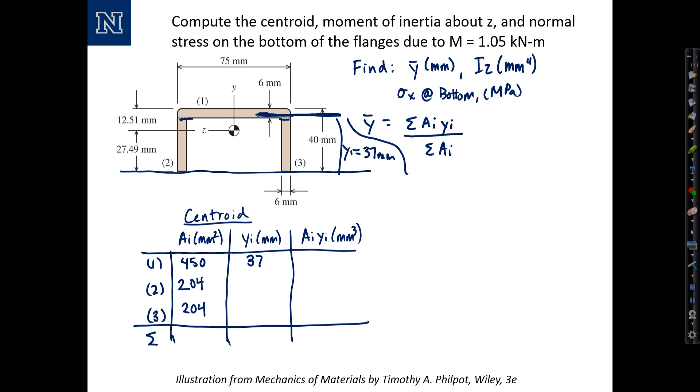Their distance, y sub i, is the distance from the reference axis to the centroid of those sections about halfway up. Since their height is 34, the centroidal distance for y two is equal to 17. And that's going to be the same for y three.